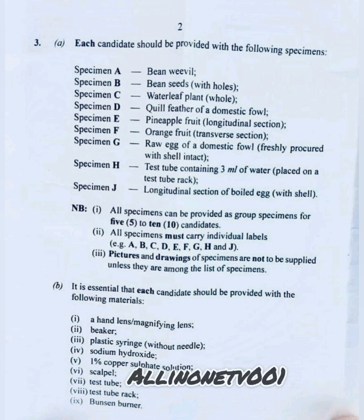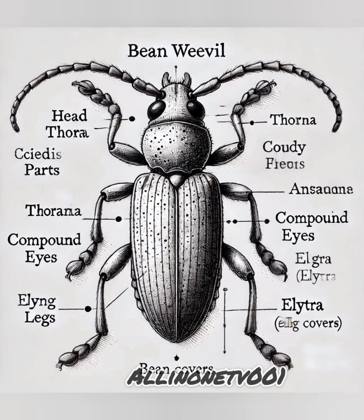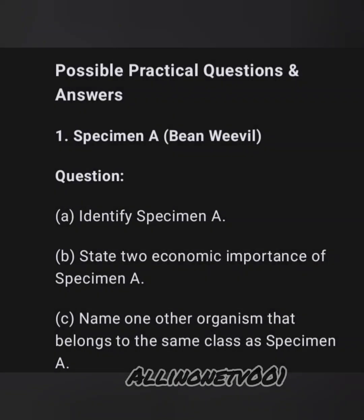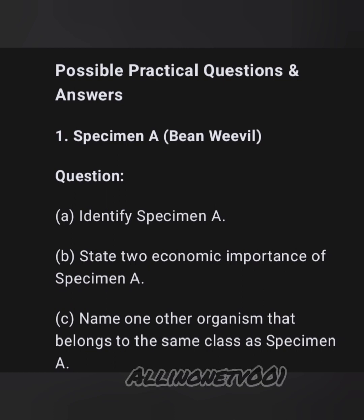From the specimen you can see on the image on screen — you can take a screenshot or save it for later. Our specimen here is the bean weevil, as you can see in the diagram. Possible questions for specimen A: question one, identify specimen A; question two, state two economic importance of specimen A; question three, name one other organism that belongs to the same class as specimen A.